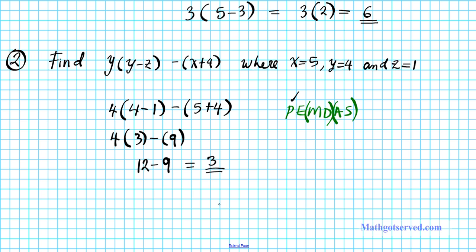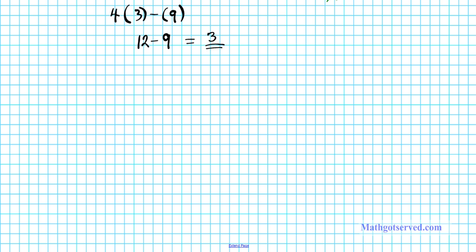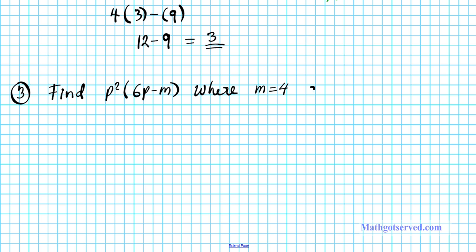Let's take a look at one more example. Problem 3: find p² × (6p − m), where m is equal to 4 and p is equal to 2. Let's substitute the value of each variable. So we're going to have 2 squared times (6 times 2 minus 4).